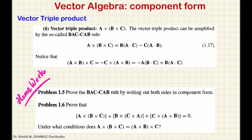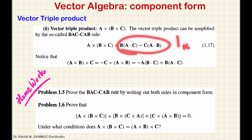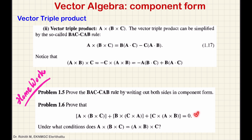You have two homework assignments in this session. First, prove the BACCAB rule using the component form — verify the X, Y, and Z components match on both sides. Second, prove the cyclic identity where the sum of the cyclic terms equals zero, i.e., A cross (B cross C) plus cyclic terms equals zero. Also derive the condition for which A cross (B cross C) equals (A cross B) cross C.